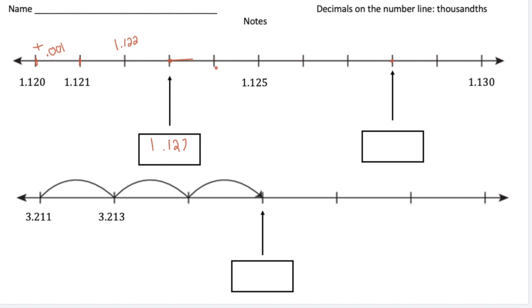Let's keep going. This would be 1 and 124 thousandths, 1 and 125 thousandths, 1 and 126 thousandths, 1 and 127 thousandths, 1 and 128 thousandths. So this is going to be 1 and 128 thousandths.